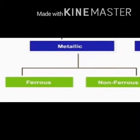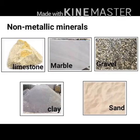Metallic minerals are further classified into two broad categories: ferrous minerals and non-ferrous minerals. As the name suggests, ferrous stands for iron — so ferrous minerals are rich in iron content, for example iron ore, chromite, and manganese. Non-ferrous minerals do not contain iron but have many other metals such as copper, silver, lead, and gold.